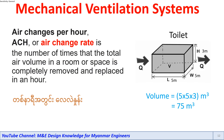This is the number of times that the air volume in a room or space is completely removed and replaced in an hour. This is the number of times that the air volume is 5m, 5m, 3m, and 75m. This is the number of times that the air volume is 5m — this is the number of times that the air volume is a new number.